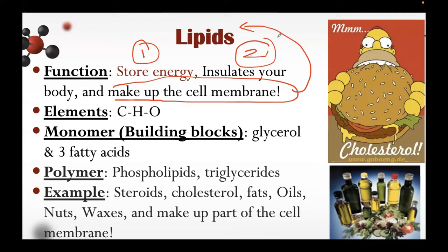The elements comprising lipids are carbon, hydrogen, and oxygen. The monomer or building block of lipids is glycerol and three fatty acids. The polymers include phospholipids and triglycerides. Sources of lipids include steroids, cholesterol, fats, oils, nuts, and waxes. Lipids also make up part of the cell membrane, so they are indeed important to our body.